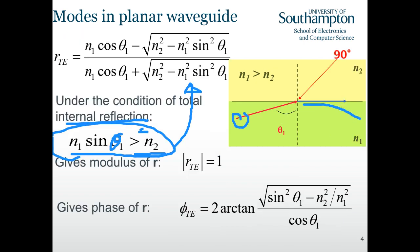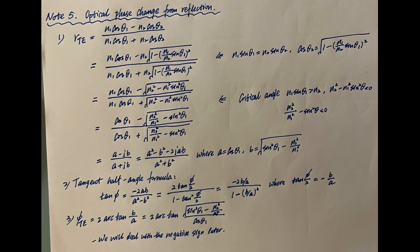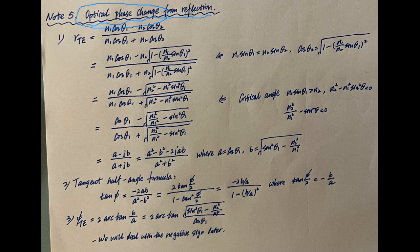The reflection factor is a complex value, and its angle is given by the Fresnel formula. This represents the optical phase change from reflection — it is not a directional phase from Snell's law.